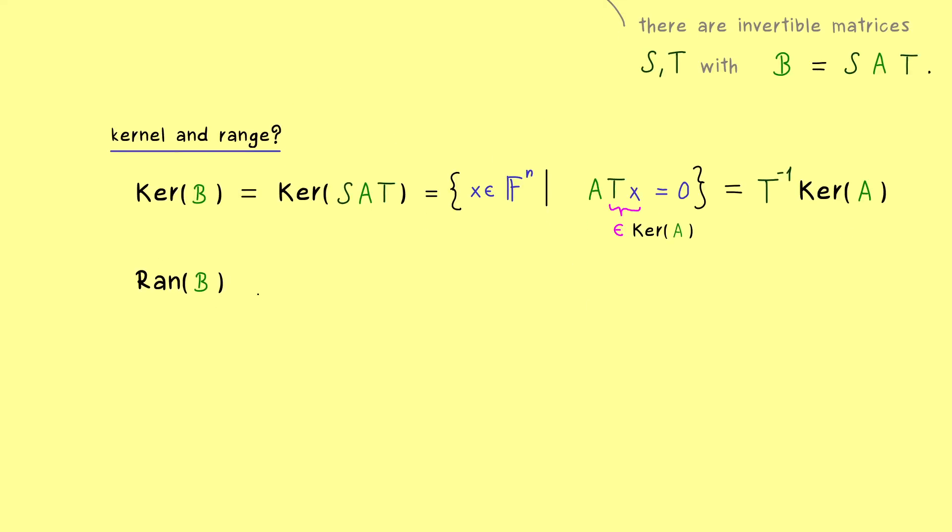Hence by this formula we have the conclusion that the kernel could definitely change under our equivalence operation. Therefore, in the next step let's consider the range of B. There we can do the same thing, we just have to know the definition of the range again.